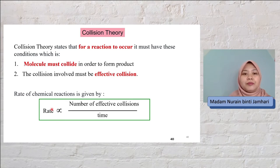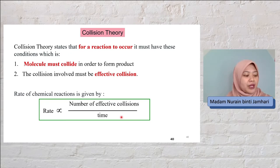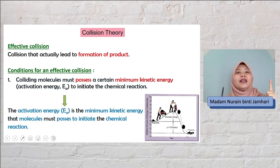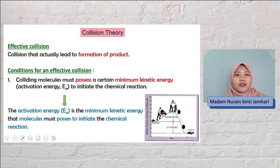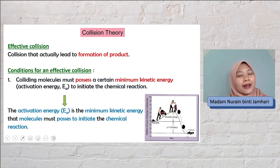Rate is directly proportional to the number of effective collisions over time. The more effective collisions over time, the more the reaction rate increases. Once they achieve effective collision, the molecules can change into product. If not, they just collide without forming any product.